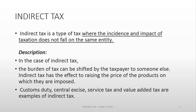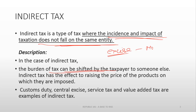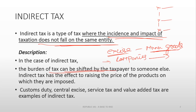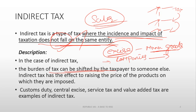In indirect taxes, the incidence and impact of taxation does not fall on the same entity — the burden can be shifted. For example, the government brings in excise duty, which is a manufacturing tax on goods produced. Companies pay excise duty but they transfer the burden along the supply chain to the wholesaler, retailer, and so on. The burden of paying the tax is shifted to another party. Examples of indirect taxes are sales tax, excise duty, custom duty, and service tax. GST happens to be an indirect tax.